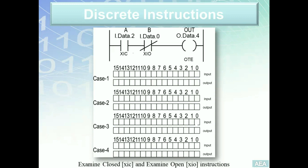As you can see right now, we have an XIC referring to input number A, an XIO referring to input number B, and an OTE referring to output OUT. What are A, B, and OUT? They're all digital — because as we covered earlier, XIC, XIO, and OTE are instructions that can only handle digital elements.